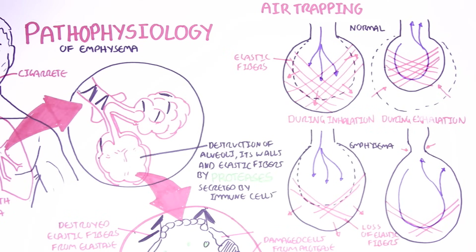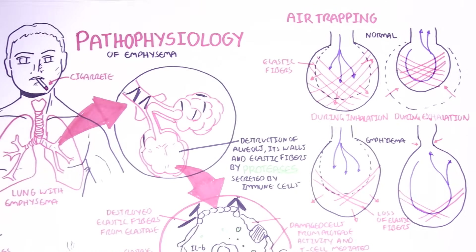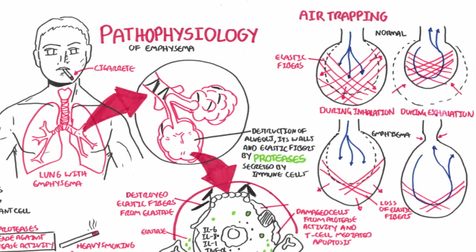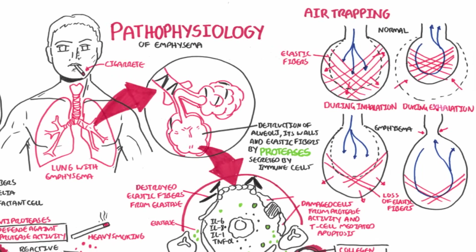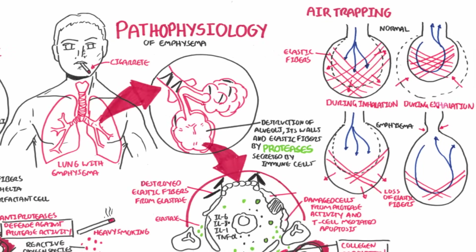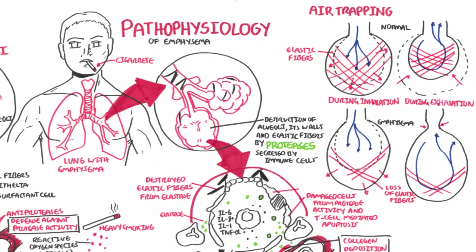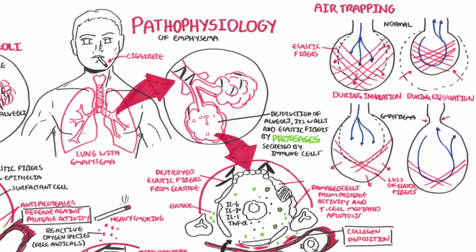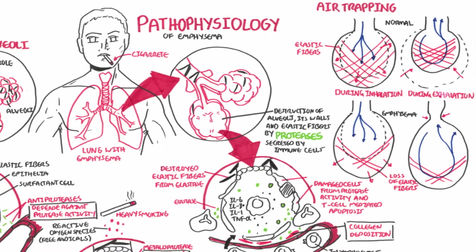To summarize: in a person with emphysema, air can be trapped within the alveoli. The destruction of the elastic fibers will reduce recoil of the airways, making it difficult to breathe out.